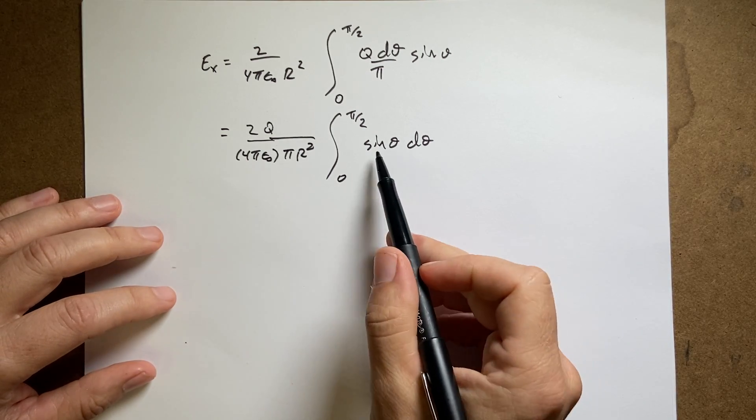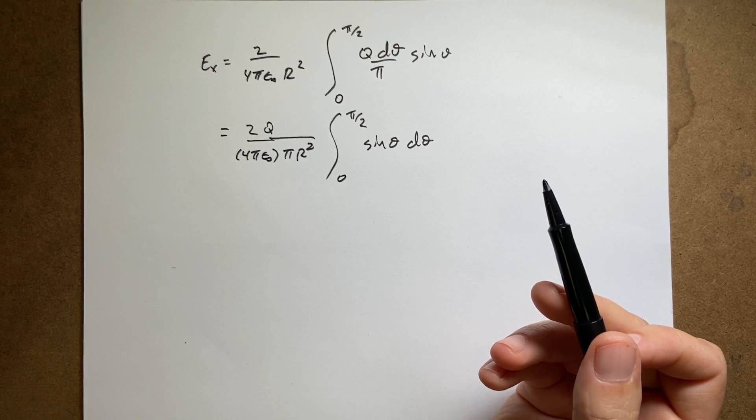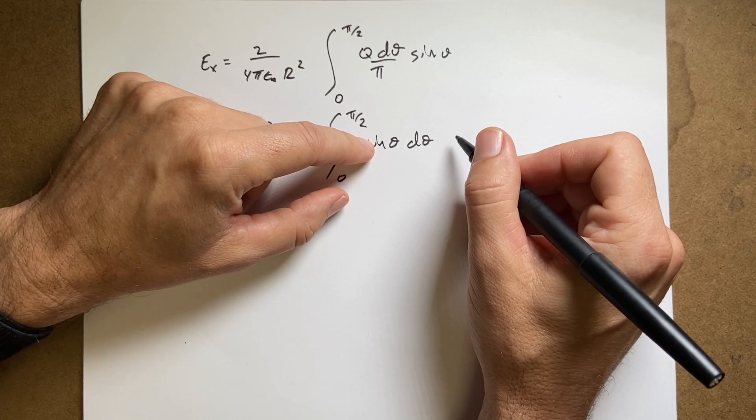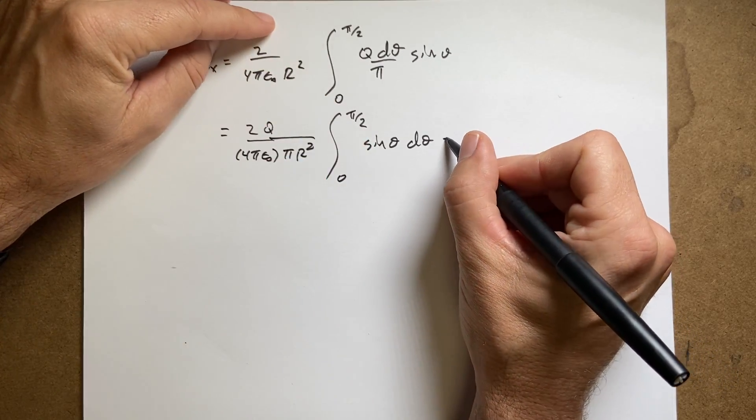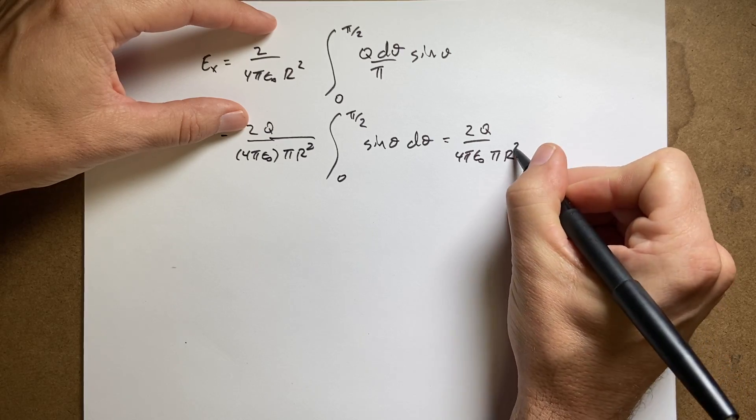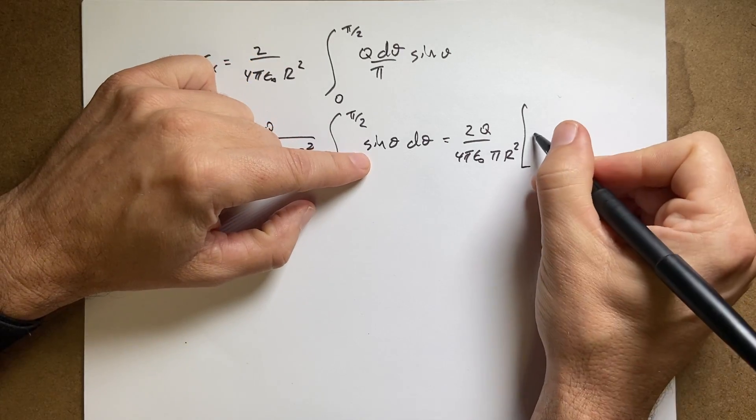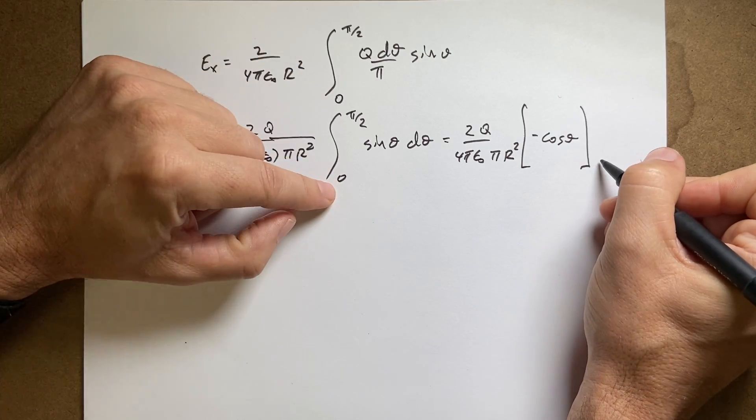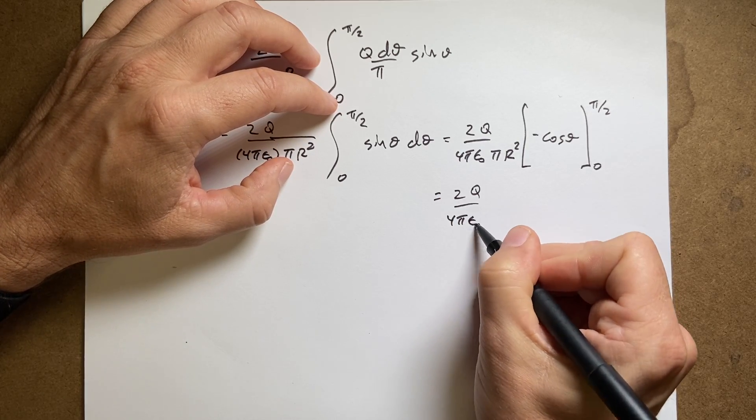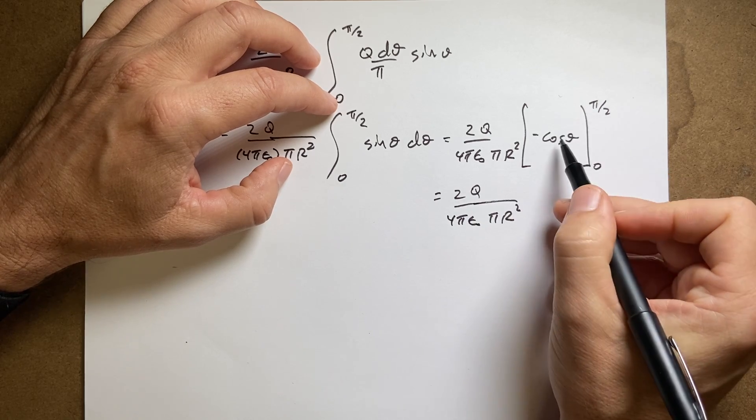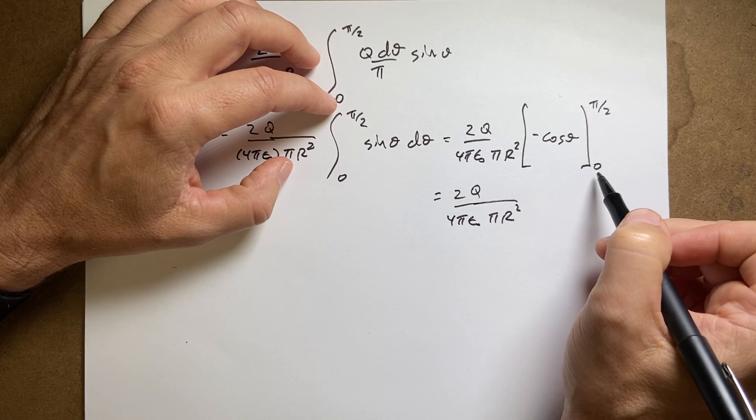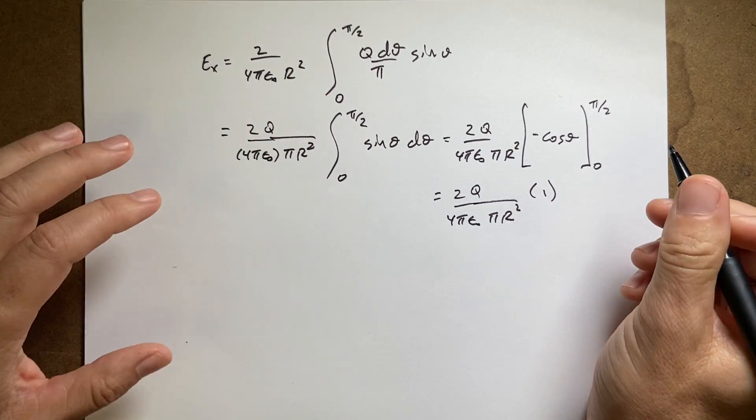So if I integrate, I can do the anti-derivative of sine theta. What do I take the derivative of that gives me sine theta? That would be negative cosine theta. So this is going to be all this stuff: 2q over 4 pi epsilon naught pi r squared, and then I get negative cosine theta from 0 to pi over 2. So this is going to be 2q over 4 pi epsilon naught pi r squared. And then I'm going to get this evaluated at pi over 2. Cosine of pi over 2 is 0, minus negative cosine of 0, so that's 1. So that whole thing just gets 1. So that's it. That's my x component of the electric field.